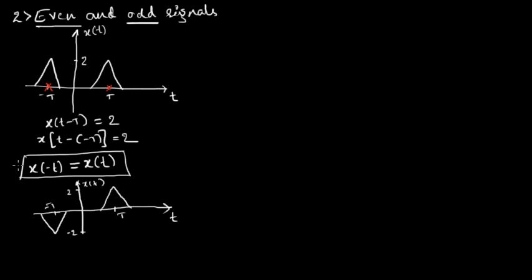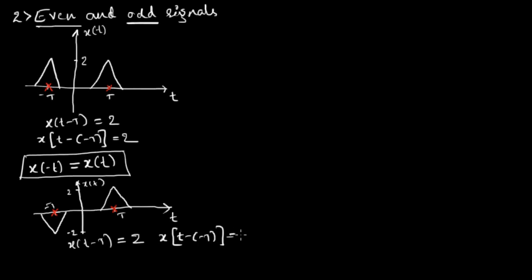If we write the value of x of t at position t, it is 2 — so x of t equals 2. If we write the value of x of t at position minus t, it is minus 2 — so x of minus t equals minus 2.